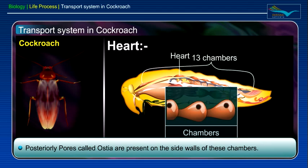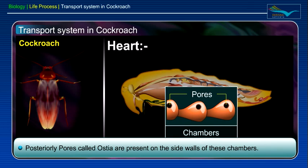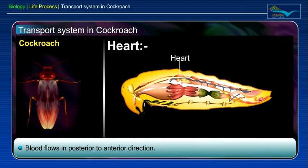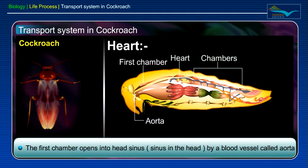Pores called ostia are present on the side walls of these chambers, through which the blood enters into the chambers. In the heart, the blood flows in a posterior to anterior direction. The first chamber opens into the head sinus by a blood vessel called the aorta.